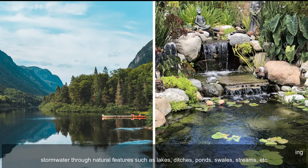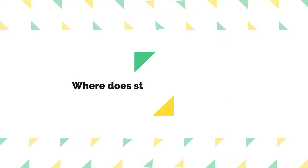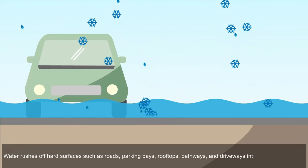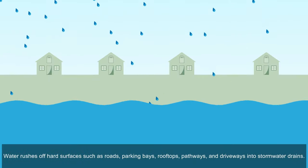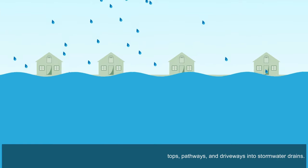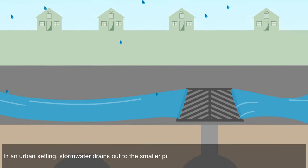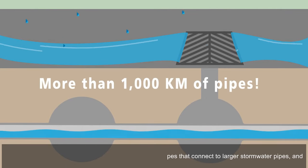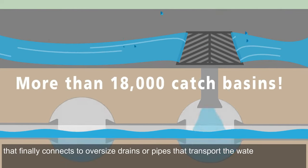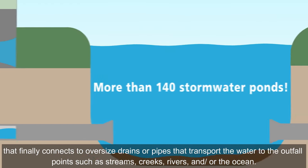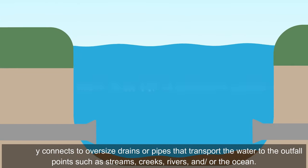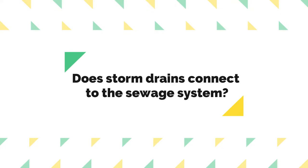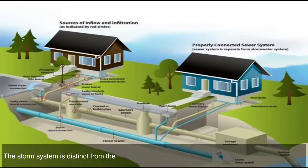Stormwater drainage systems frequently collaborate with the environment, channeling, attenuating, and discharging stormwater through natural features such as lakes, ditches, ponds, swales, and streams. Water rushes off hard surfaces such as roads, parking bays, rooftops, pathways, and driveways into stormwater drains. In an urban setting, stormwater drains out to smaller water pipes that connect to oversized drains or pipes transporting water to outfall points.